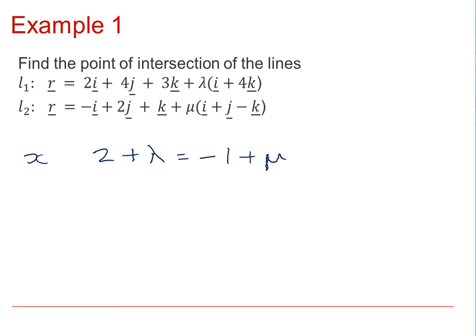For the y component, that 4 will equal 2 plus mu. This indicates that mu equals 2 at that point of intersection. And for the z component, we have that 3 plus 4 lambda equals 1 minus mu. Using the substitution mu equals 2 will mean that we can work out that lambda equals minus 1.